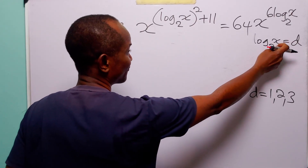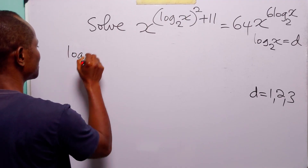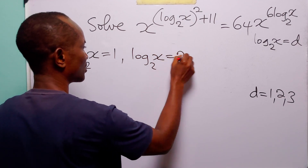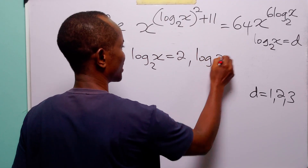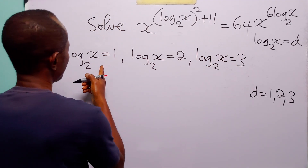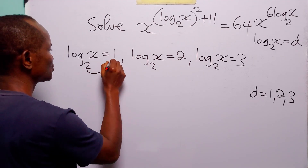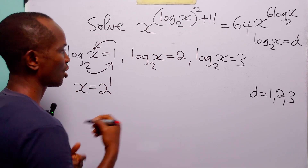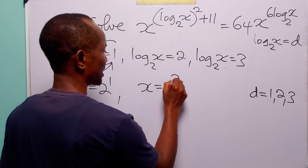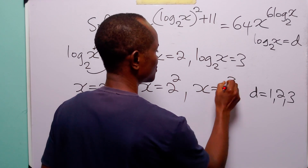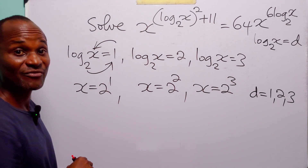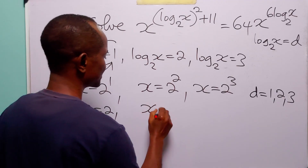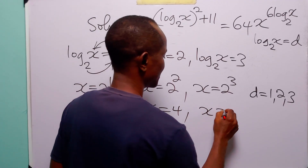Going back to find the values of x, we have either log to base 2 of x equals 1, or log to base 2 of x equals 2, or log to base 2 of x equals 3. This means x equals 2 to the power 1, or x equals 2 to the power 2, or x equals 2 to the power 3. So the three values of x are x equal to 2, x equal to 4, and x equal to 8.